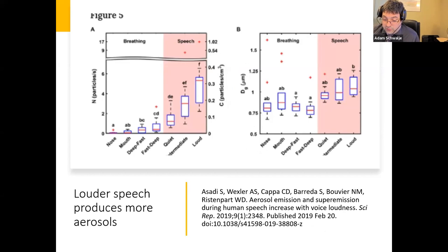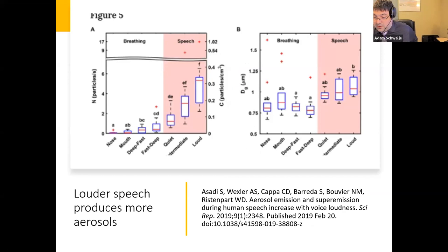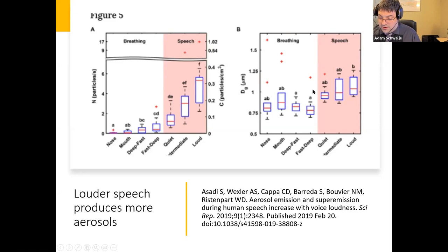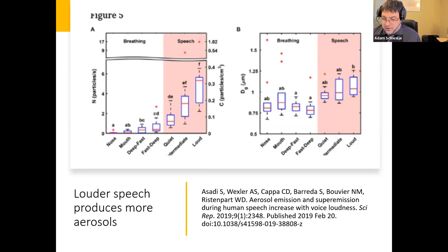Aerosols can be produced by breathing, speaking, playing wind instruments, singing, and playing brass. A 2019 study by Asadi and others highlights that louder speech produces more aerosols. The number of aerosols produced by loud speech is higher than other modes of production. That gave us the beginning of an idea that if speech is a problem, then singing may also be a problem, and if singing is a problem, wind instruments and brass instruments might also be a problem.